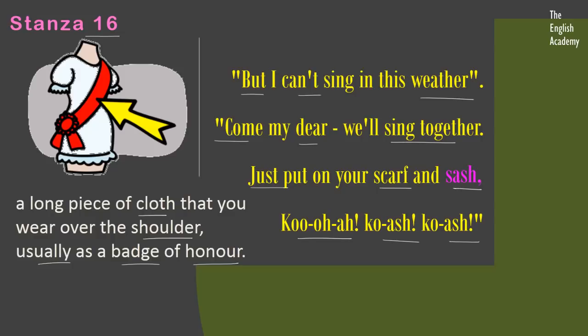The frog forced the bird. He said 'we'll sing together' and told her that in order to protect herself from the rain, she could wear her scarf and also the sash he had given her. Then he started singing ku-o-a, ku-ash, ku-ash. So in this stanza we learn that as it was raining, the nightingale refused to sing, but the frog forced her and he started singing.